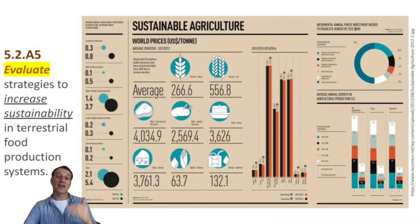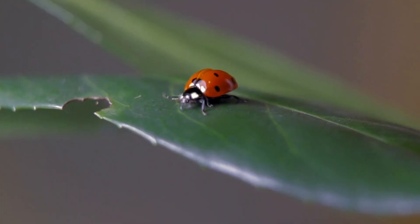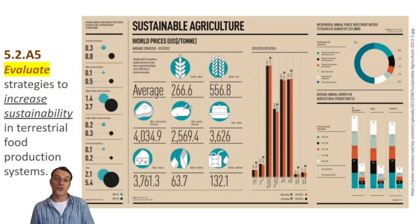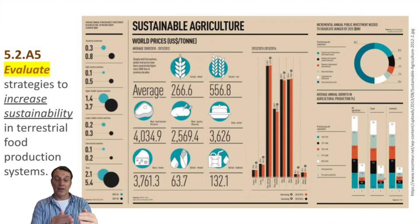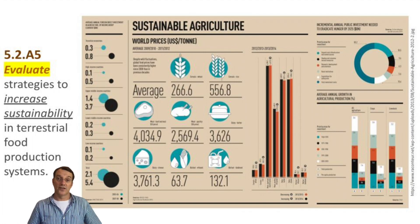There are many strategies we can use to make food production more sustainable. This includes precision agriculture to use resources more efficiently, integrated pest management to reduce chemical use, and crop rotation to maintain soil health. We can also work on reducing food waste and finding ways to store carbon in agricultural soils. When we combine these approaches, we can build a food system that meets our needs without compromising the planet's health or the ability of future generations to meet their needs — that, by definition, is sustainable agriculture.